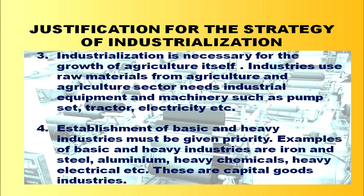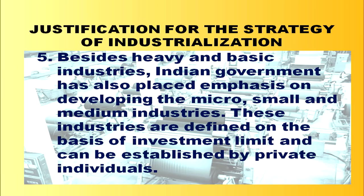The fourth justification is that establishment of basic and heavy industries must be given priority within industrialization. Examples include iron and steel, aluminum, heavy chemicals, and heavy electrical industries. These are capital goods industries, and capital goods are needed for growth in the short as well as the long run. Besides heavy and basic industries, the Indian government has also placed emphasis on developing micro, small, and medium industries, defined on the basis of investment limit.